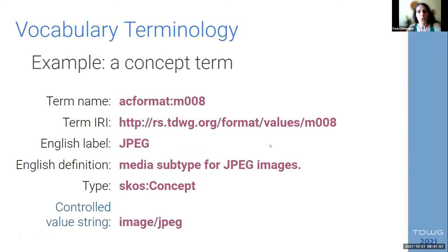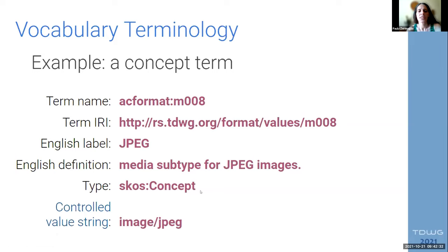For a concept term, we can have this one: JPEG, a type of format for images. This is interesting because you can see that the term name is impossible to guess what it's about. However, the label tells us something that humans can understand. It has the term name, the identifier, an English label, the English normative definition, the type which is 'concept,' and we use a controlled value string for this concept — in this case, image/jpeg.